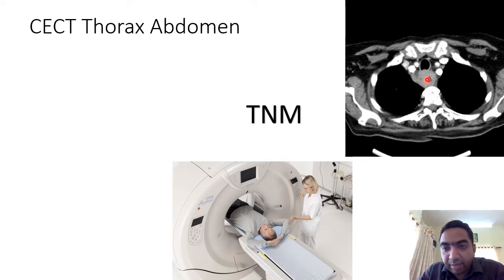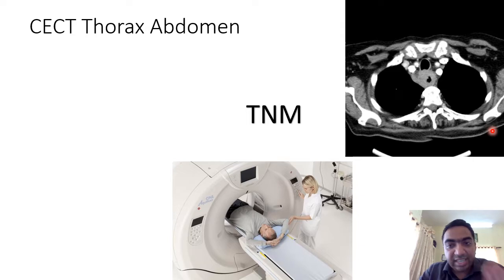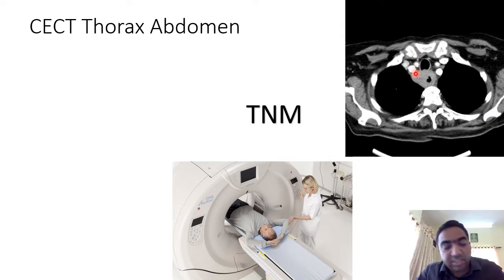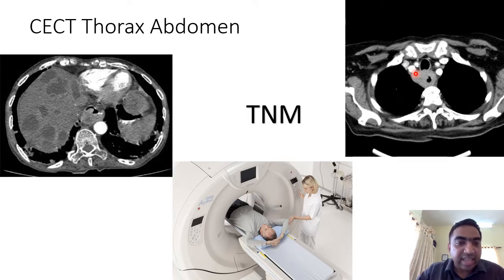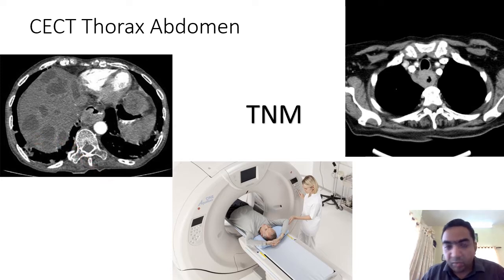On CT thorax and abdomen, the primary lesion in the esophagus can be visualized — you can see the esophagus, the trachea with air inside, the lung, and the lesion within the esophagus. T staging and nearby nodes can also be visualized, as well as metastasis such as liver metastasis in an esophageal tumor.